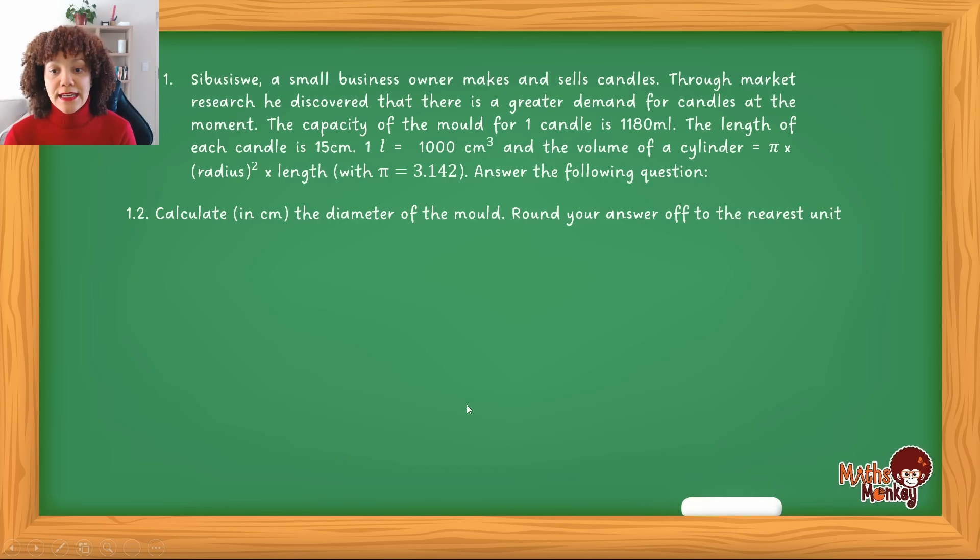Then the next question. So this is again the same scenario, but now the next question, and this is a very intricate question. If you can understand this with volume and capacity, then you've got volume down. So if you don't get it the first time that I go through it, go through it the second time, go through it the third time until you can grasp this.